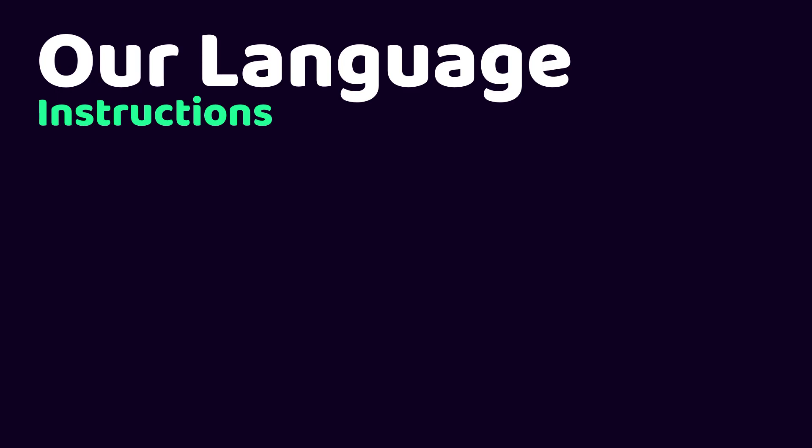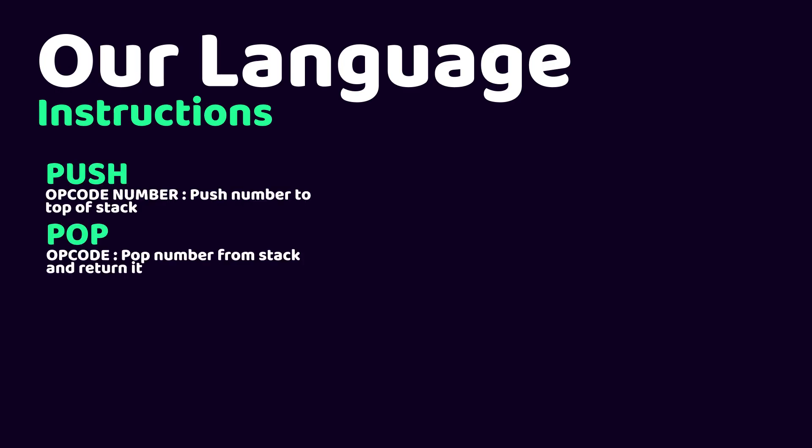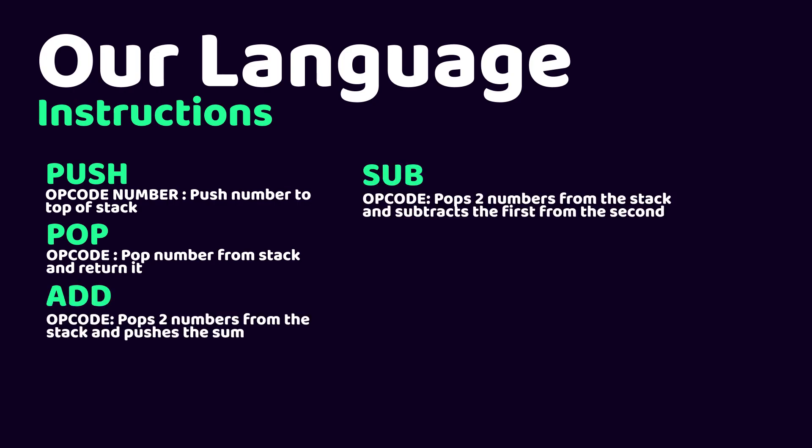Now that we know how a stack works, let's take a look at our language and its instruction set. You are already familiar with push and pop. For the push instruction, we receive an opcode — the word push — and a number, like 10 or 7 in our previous example. Add and sub work similarly, but in both cases only the opcode is needed, because they both pop the first two numbers from the stack and either add or subtract them, then push the result back on the stack.